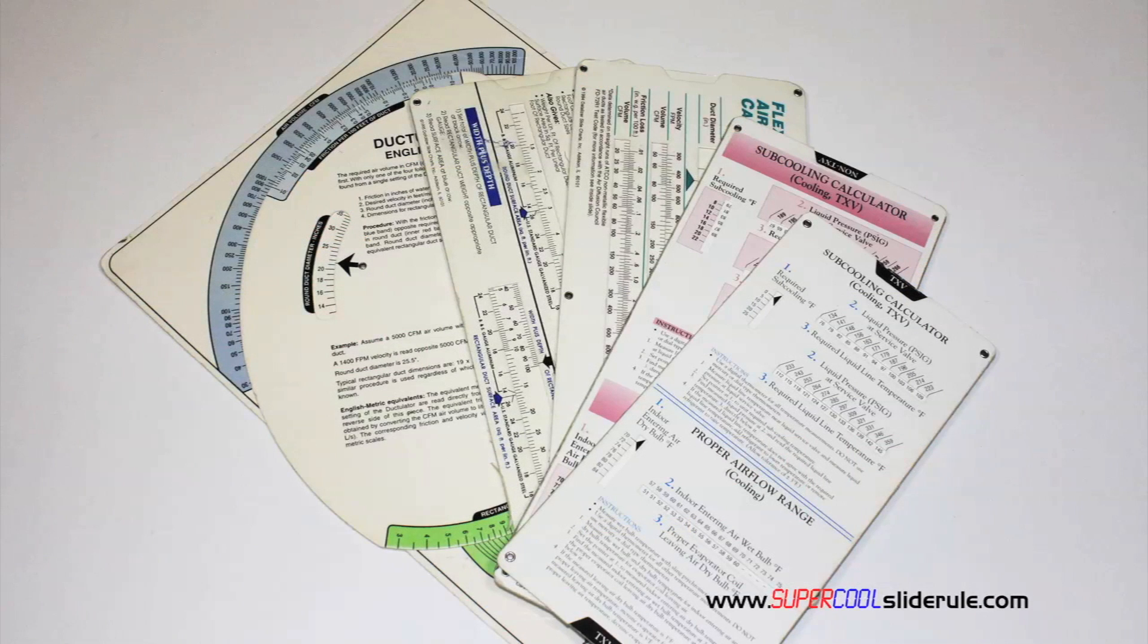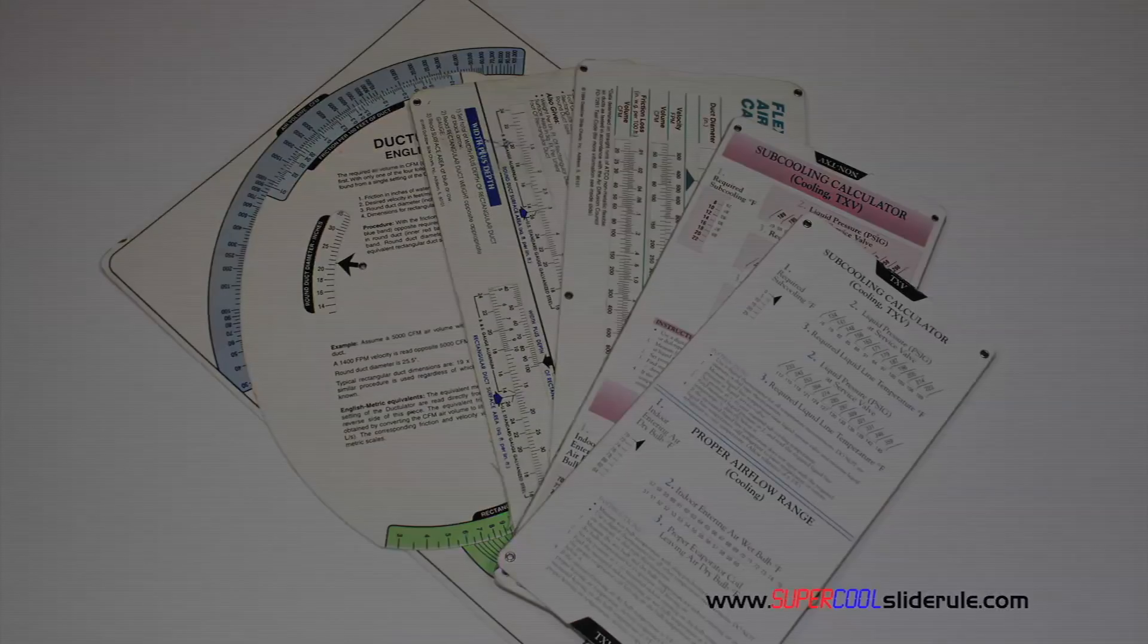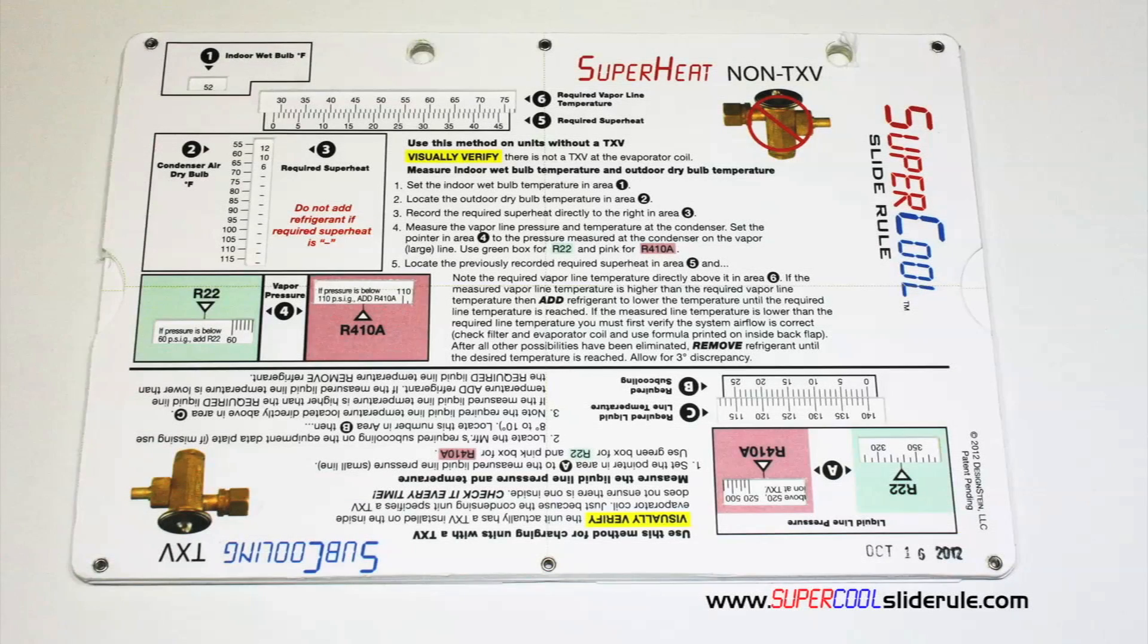technicians have carried four or five different slide rules. You have one for R22, one for R410A, one for metal duct sizing, one for flexible duct sizing, and yet others for diagnostics or troubleshooting. Thankfully, those days are gone.